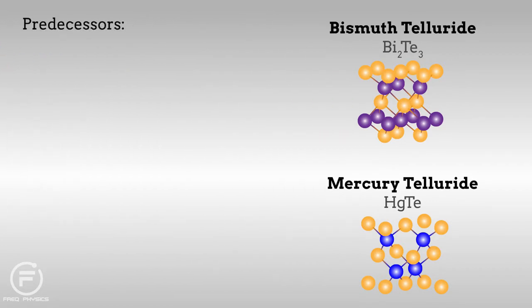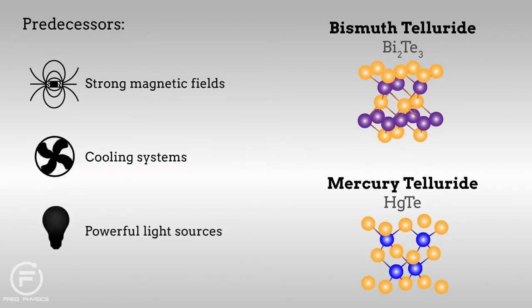Unlike their predecessors, which often required strong magnetic fields, specially designed cooling systems and powerful light sources to be tested, these materials are easy to handle and can be probed at room temperature.